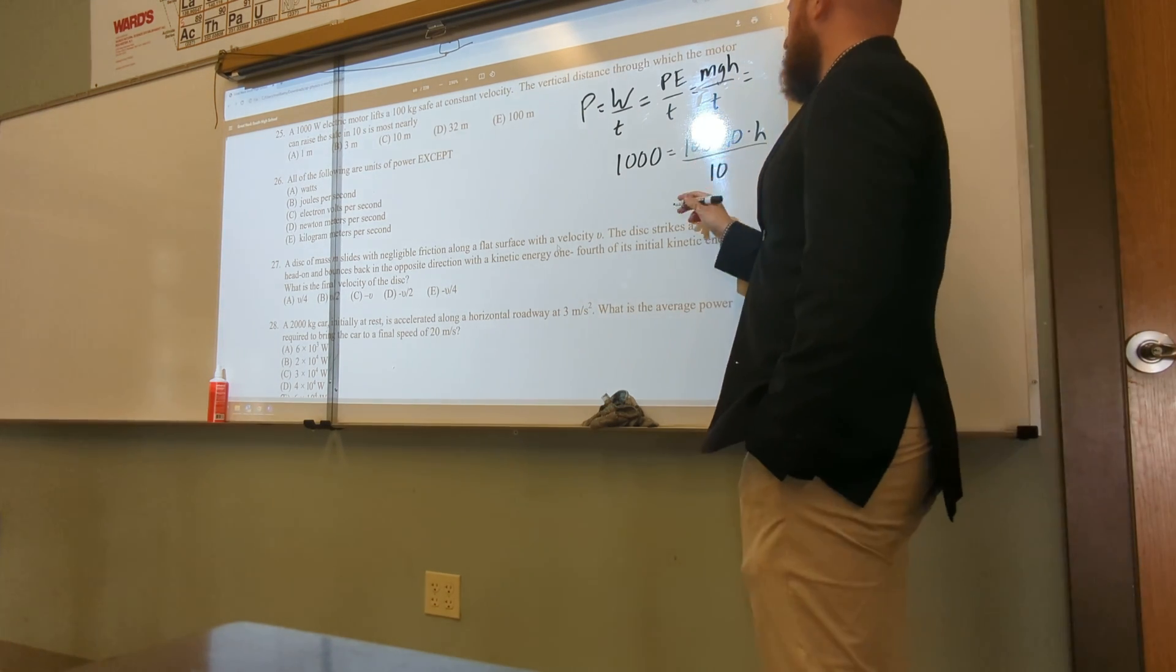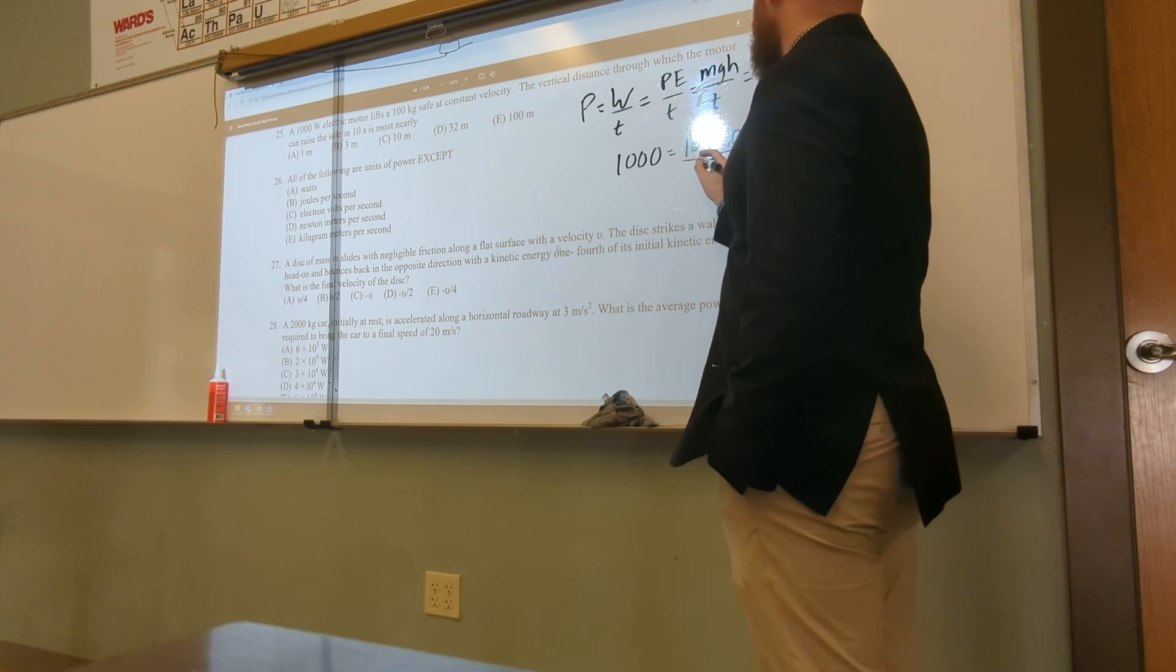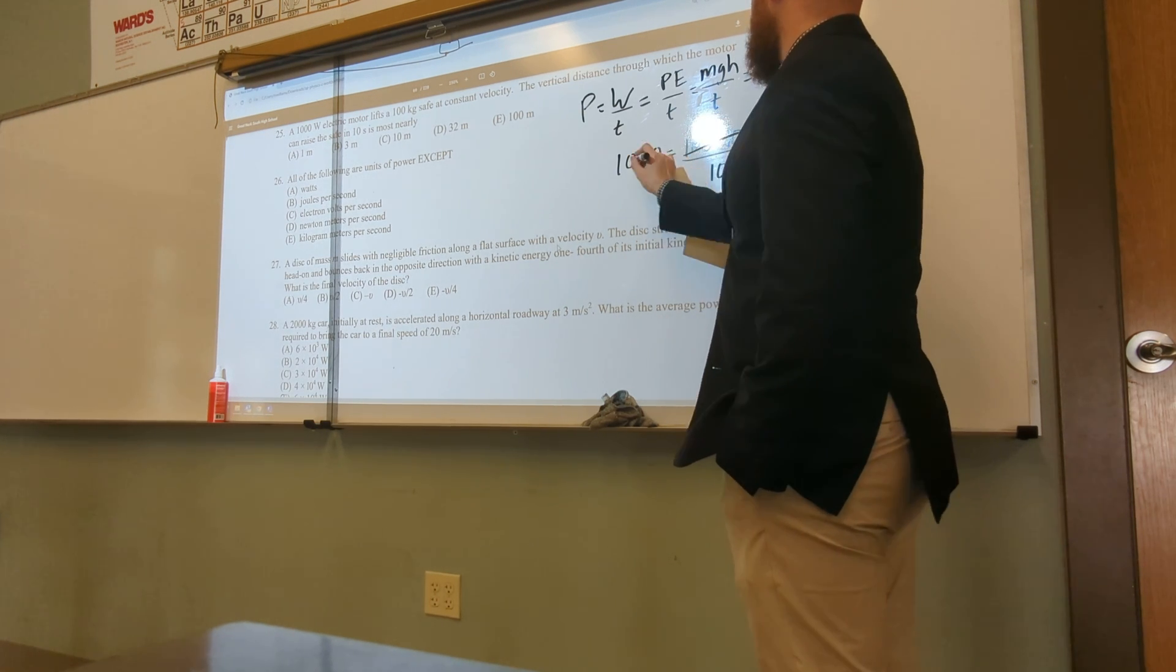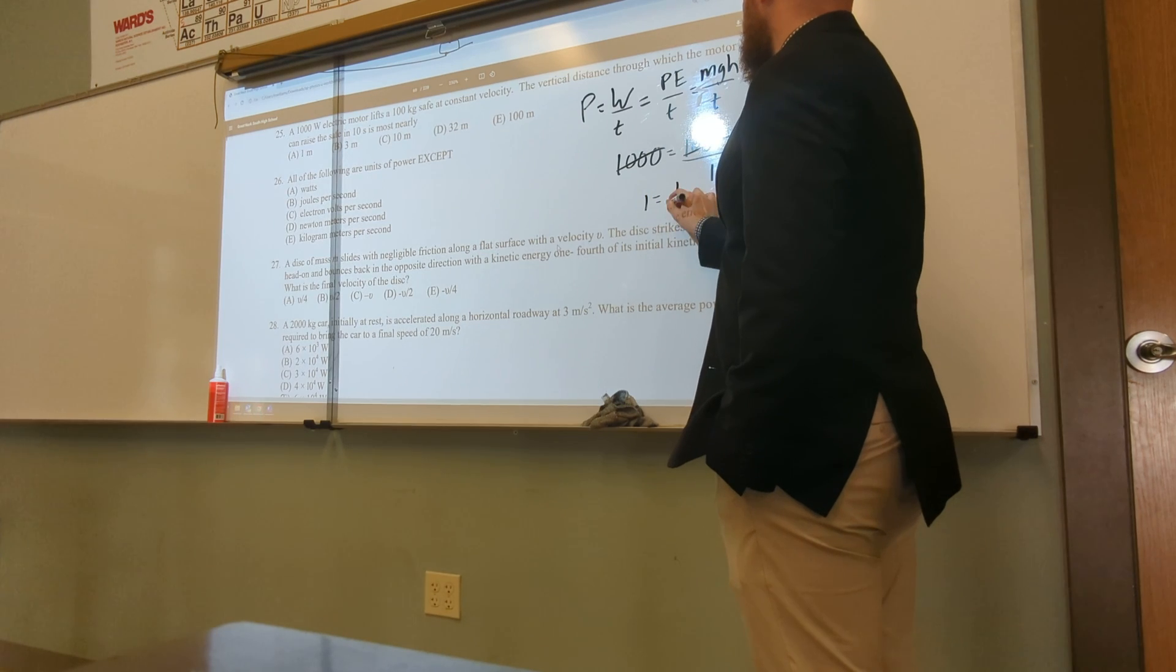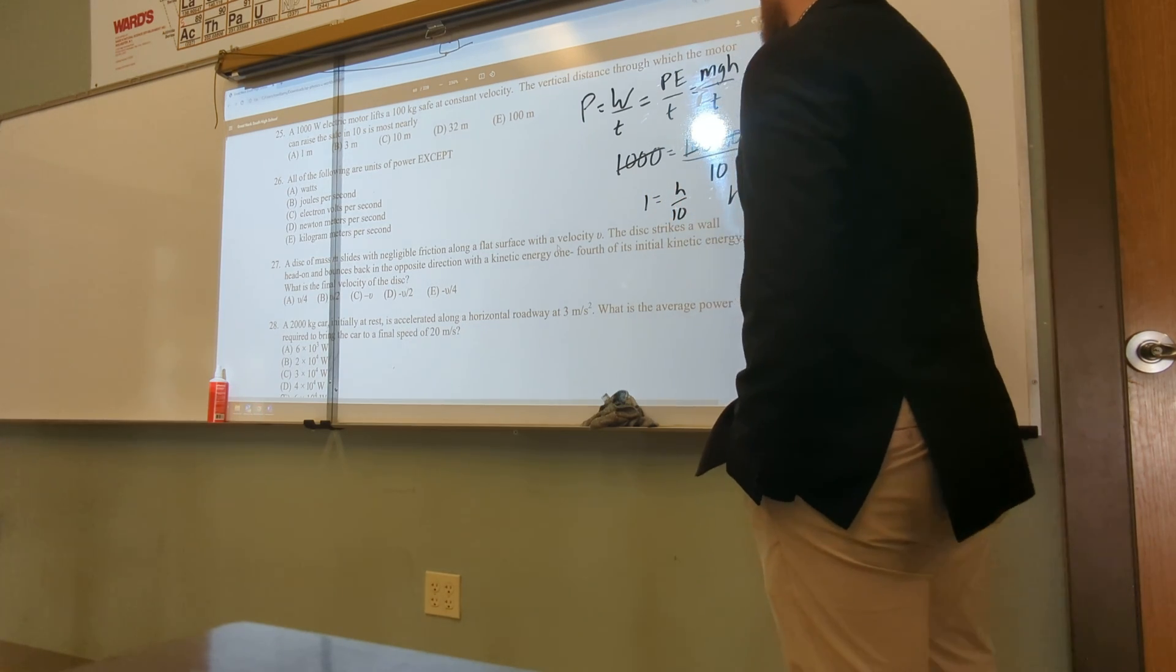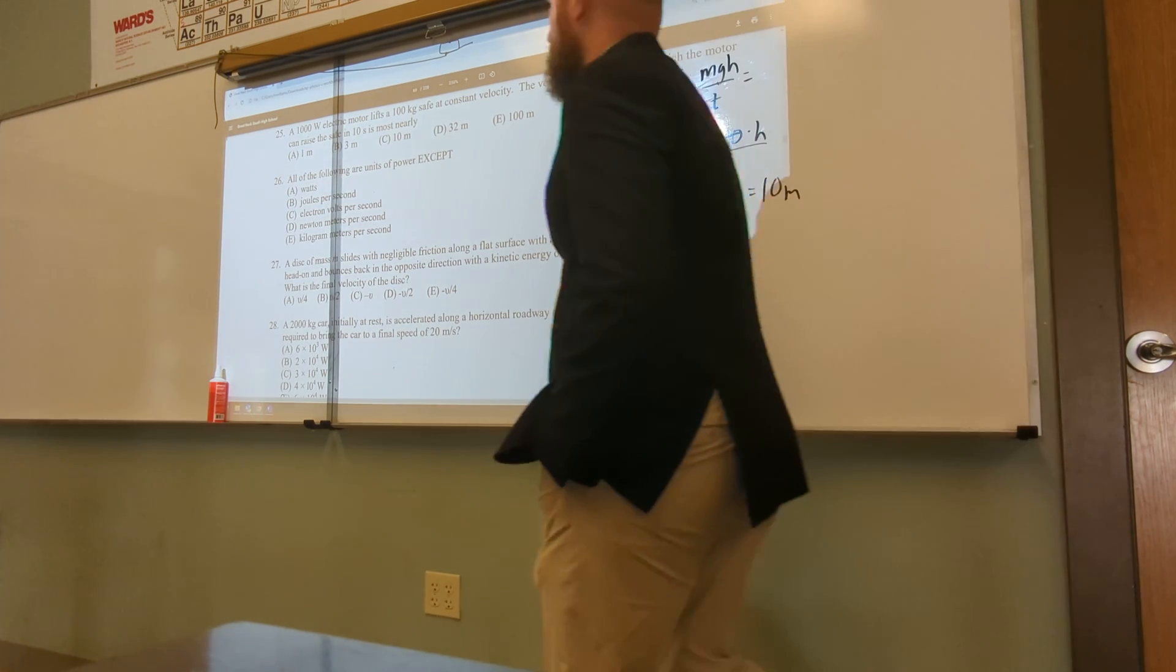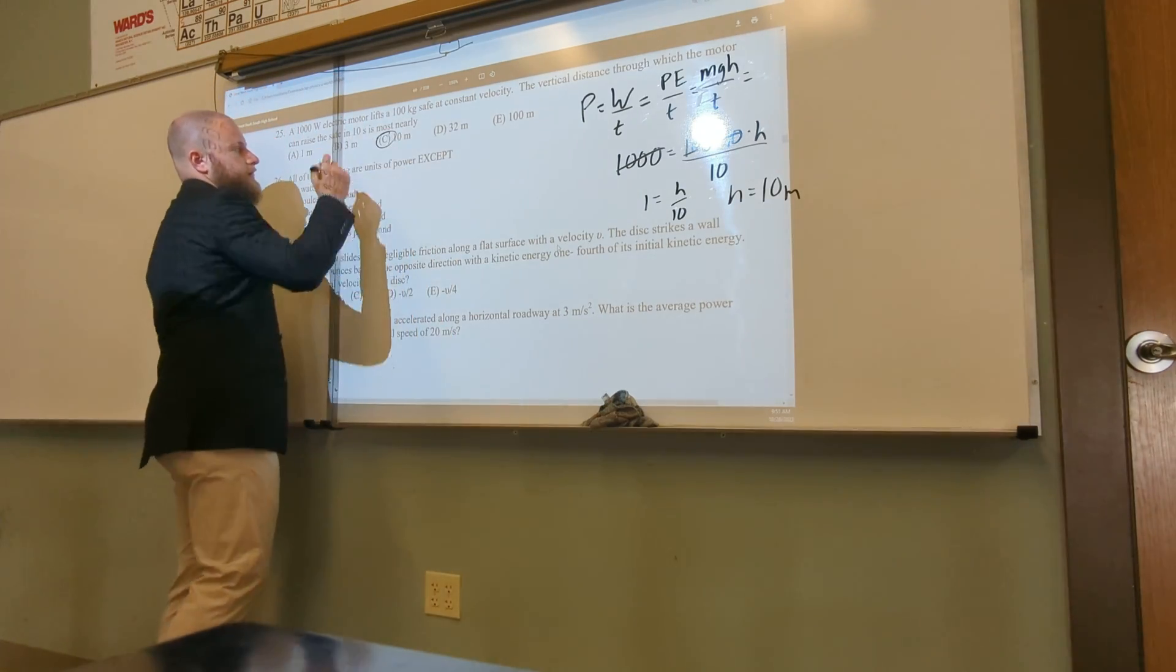So this is, well, this cancels out with this. So I have 1 equals H over 10, so H equals 10 meters. The correct answer is C.